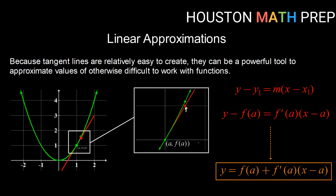We take our point (a, f(a)) and using point-slope form, we substitute y₁ for f(a), get our slope using the derivative at a — f'(a) — and replace x₁ with a. Solving for y by adding f(a) to the other side, we get that any y-value on the tangent line can be found by taking f(a) plus f'(a) times (x minus a).